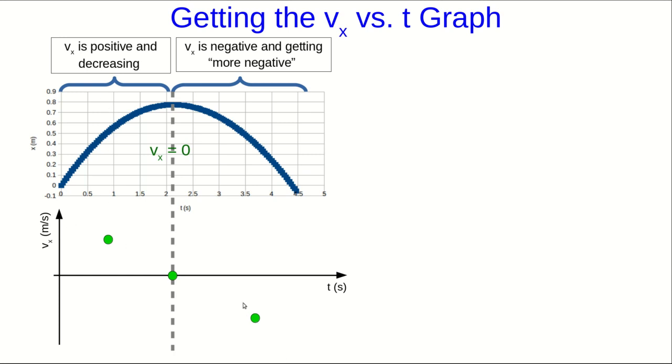But beyond that, just by looking at the x versus t graph, we can't tell the shape. It could be something like this or it could be something like this; both of those are decreasing everywhere.